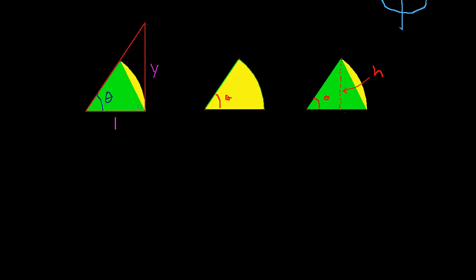We know this is a right angle here. I have an unknown side, a known side, and this angle theta. What relates all three of those? Tangent. The tangent of theta equals the opposite divided by the adjacent, which is y over 1, so my height is just the tangent of theta. So the area of the great big triangle is the tangent of theta divided by 2.